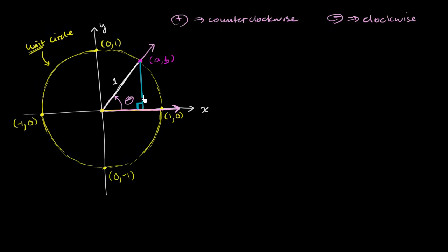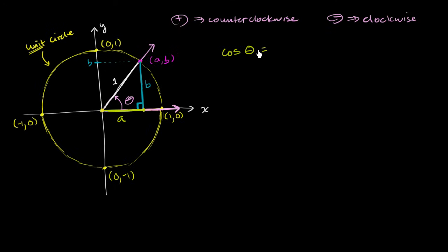Now what is the length of this blue side right over here? You could view this as the opposite side to the angle. This height is the exact same thing as the y-coordinate of this point of intersection. So this height right over here is going to be equal to b — the y-coordinate right over here is b. Now, exact same logic: what is the length of this base of the right triangle? Well, this is going to be the x-coordinate of this point of intersection. This is the point x equals a, and this whole length between the origin and that point is of length a.